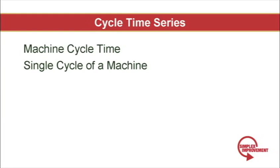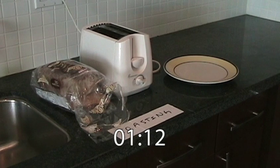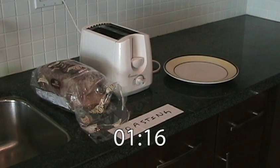The next cycle time I want to introduce is machine cycle time. When working with a machine, this is how long it takes for the machine to complete a single cycle of an operation. If you recall our toaster, it takes 77 seconds to toast bread. This is the machine cycle time.